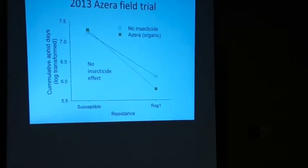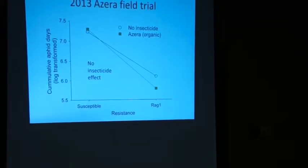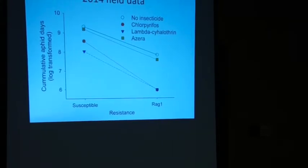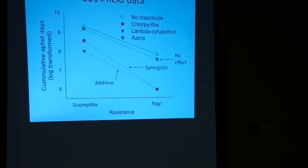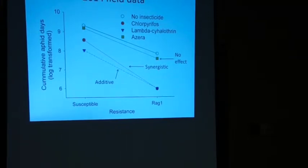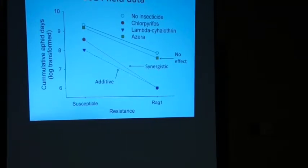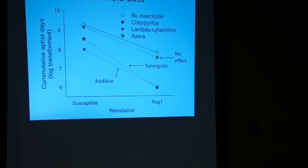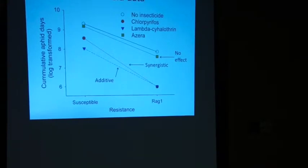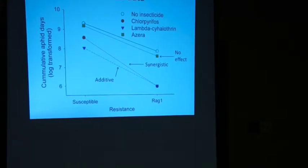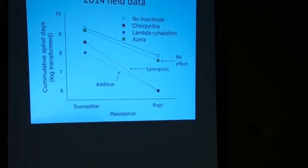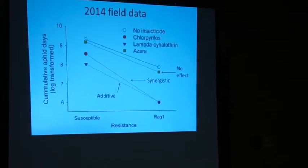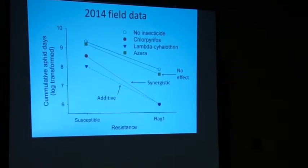We included all these insecticides again for a second year. Similar results occurred for Azera — it didn't work again. But for the two conventional insecticides, they actually switched their roles: the one that had a synergistic interaction in the first year was now additive, and the one that was additive was now synergistic. So something different was going on each of those years.